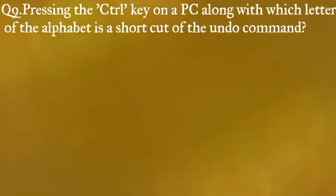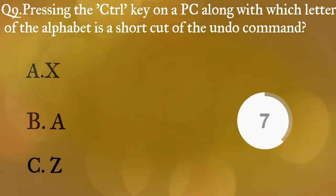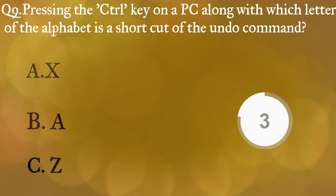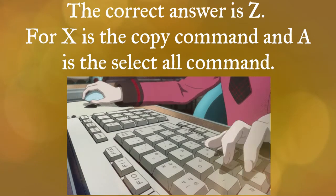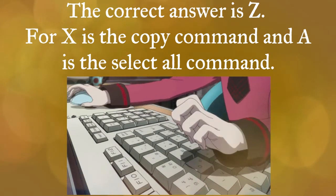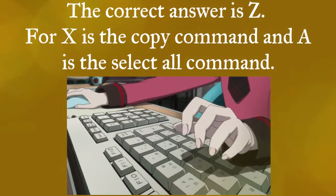Question nine: pressing the Control key on a PC along with which letter of the alphabet is a shortcut for the undo command? A) X, B) A, C) Z. The correct answer is Z. Ctrl+X is the cut command, and Ctrl+A is the select all command.